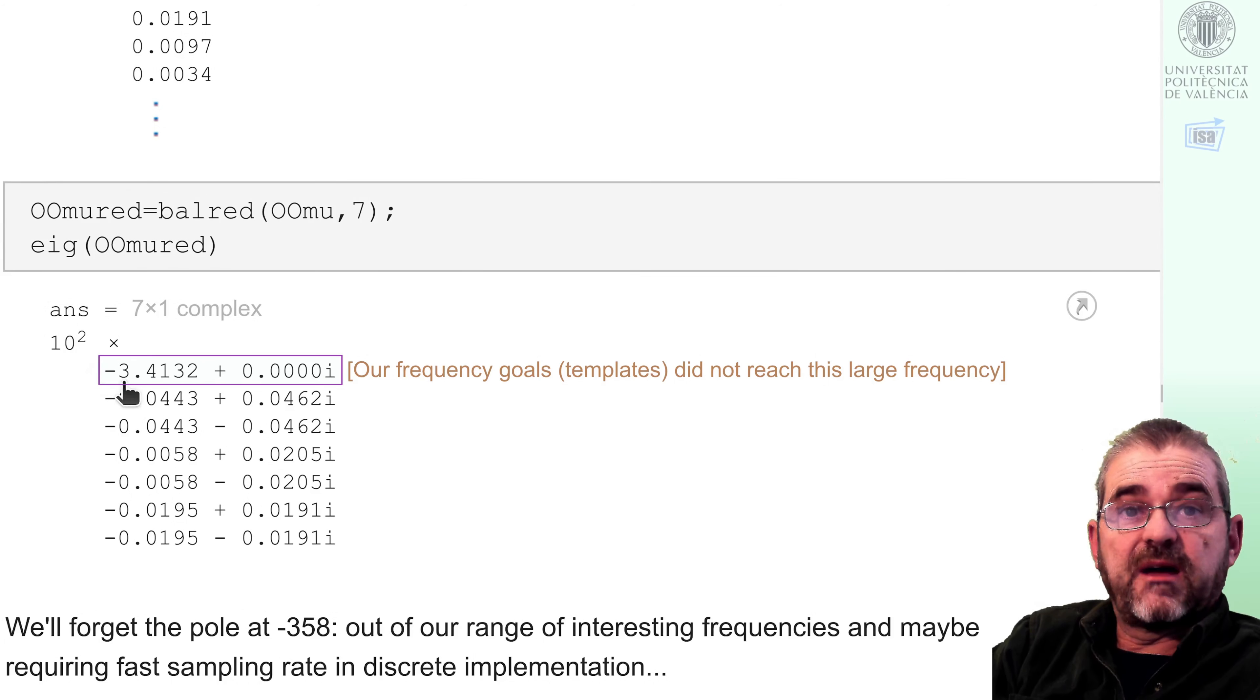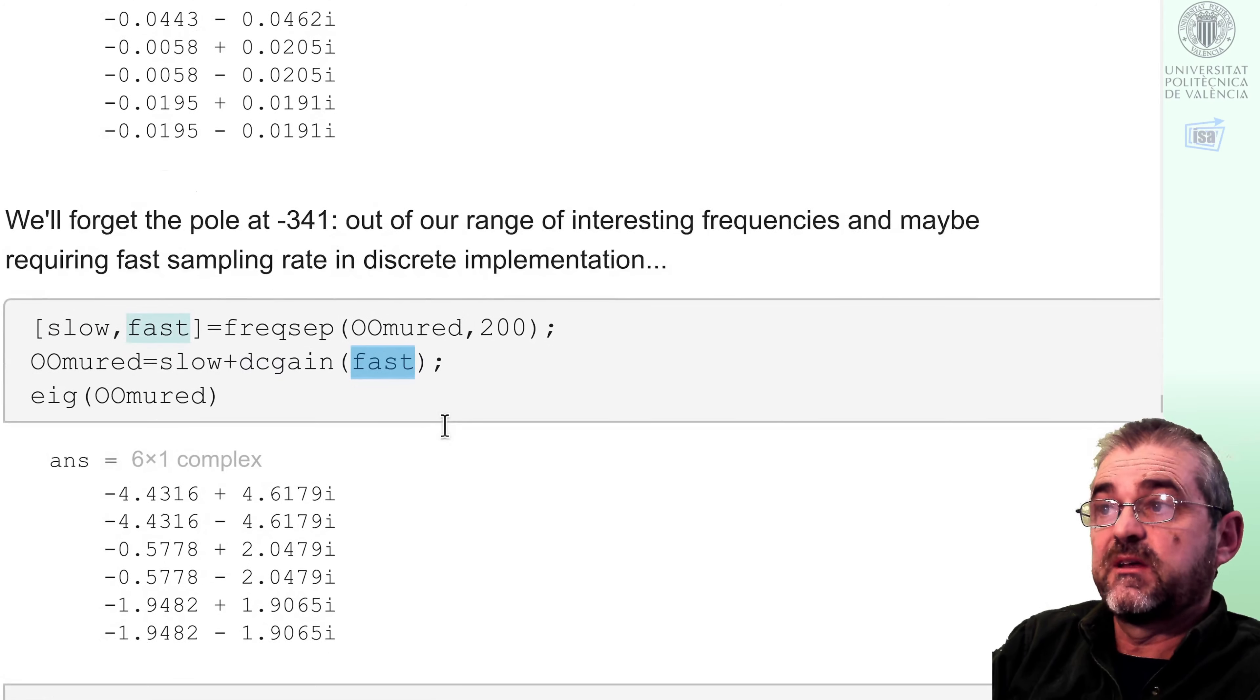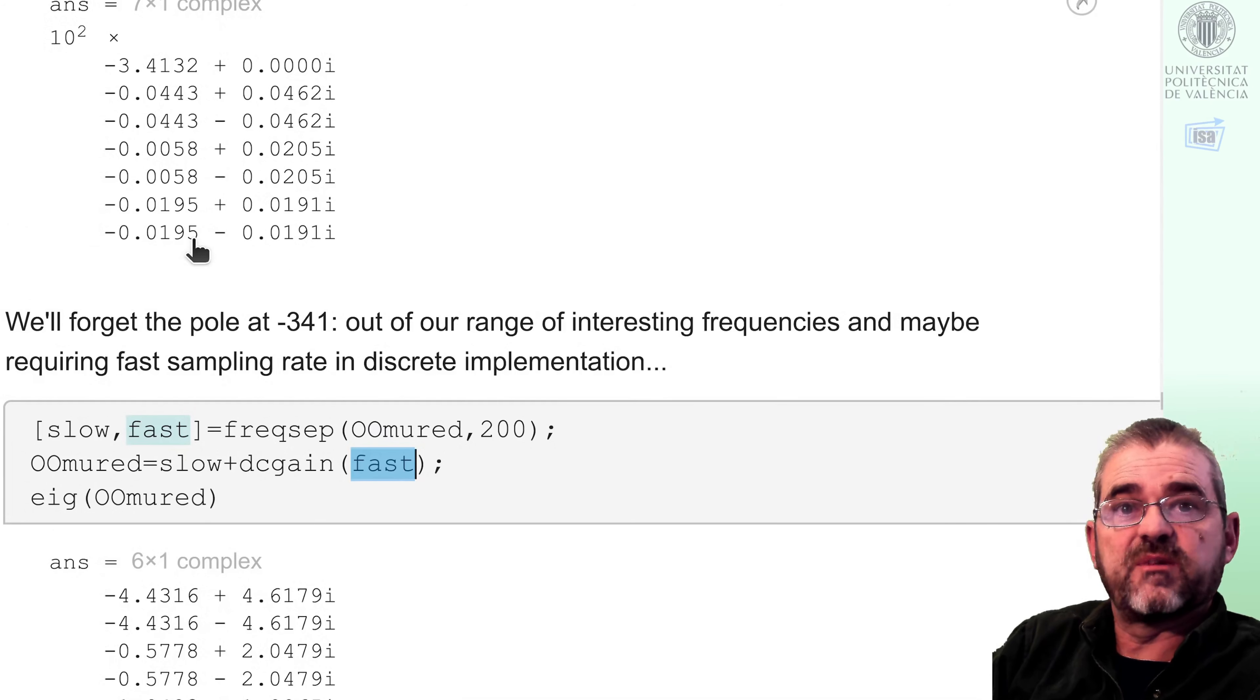And if we look at the eigenvalues, we see that there is a pole in minus 341 that we may also wish to eliminate if we don't lose performance. We will eliminate that pole with a freqsep MATLAB command, got a frequency of 200, so we will keep the slow components, all poles with natural frequency below 200, and only the DC gain of the fast components.